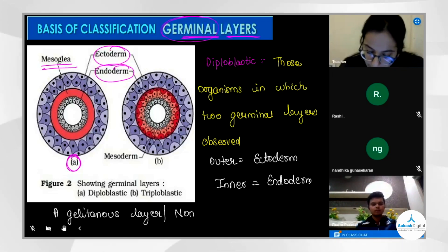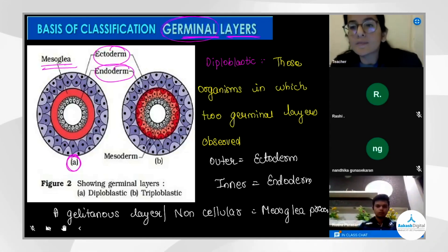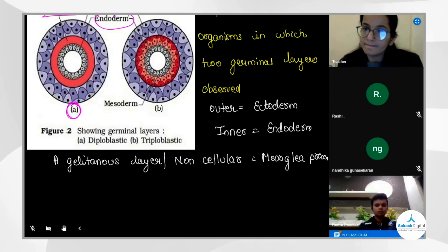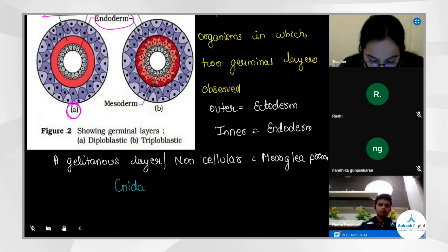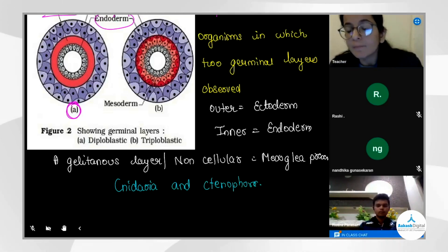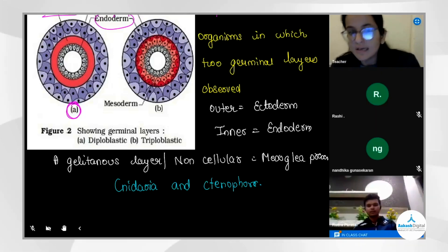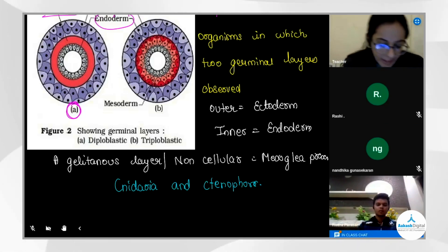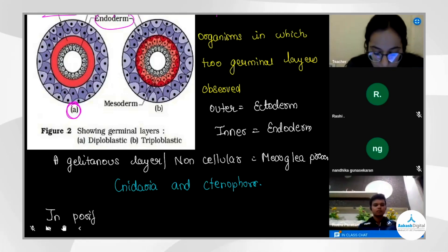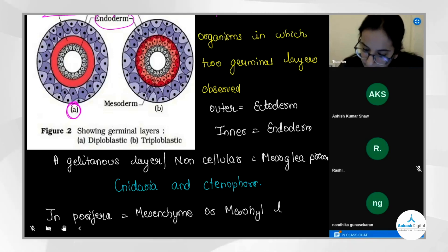Where are diploblastic organisms observed, and which phylum has diploblastic organization? The answer: phylum Cnidaria and Ctenophora have diploblastic organization. Porifera is not included because in Porifera there is no formation of a germ layer — they have a cellular grade of organization, and ectoderm, endoderm, and mesoglia are not observed. Instead, a mesenchyme layer is present in Porifera.